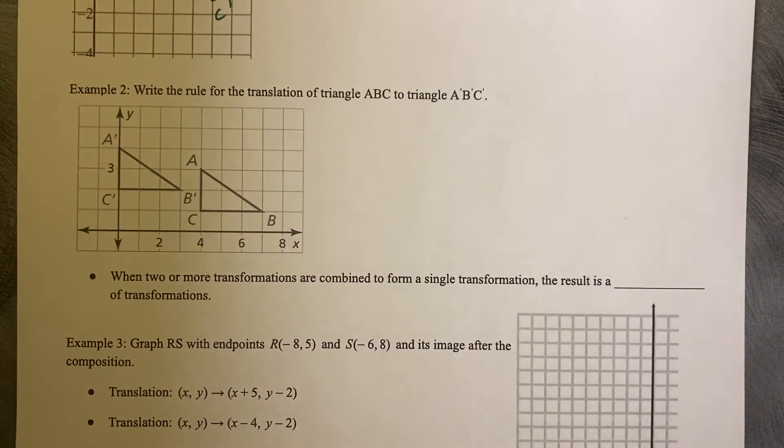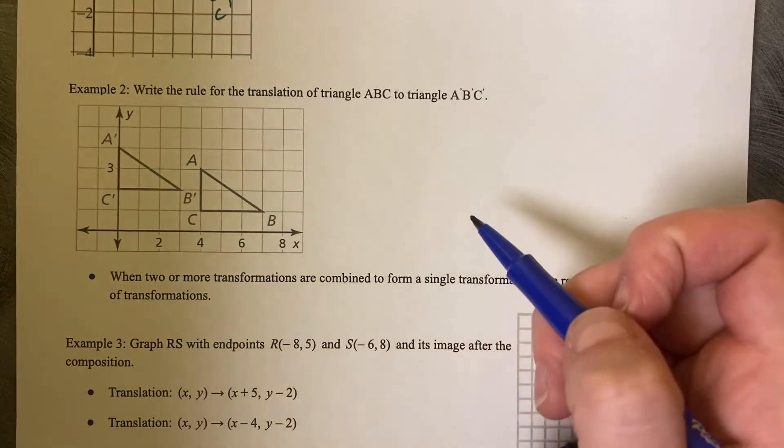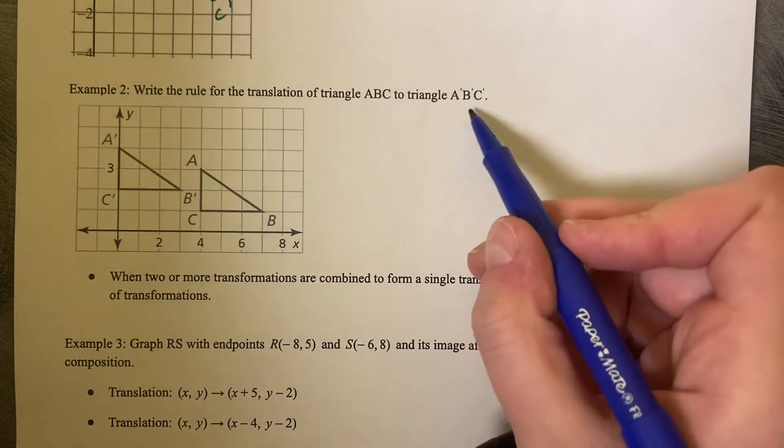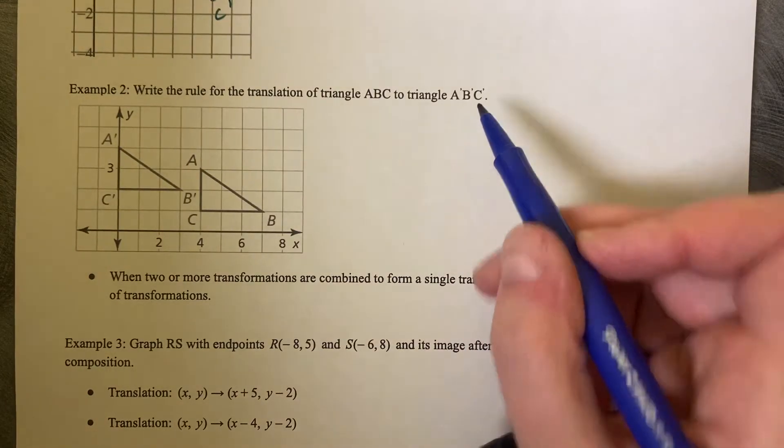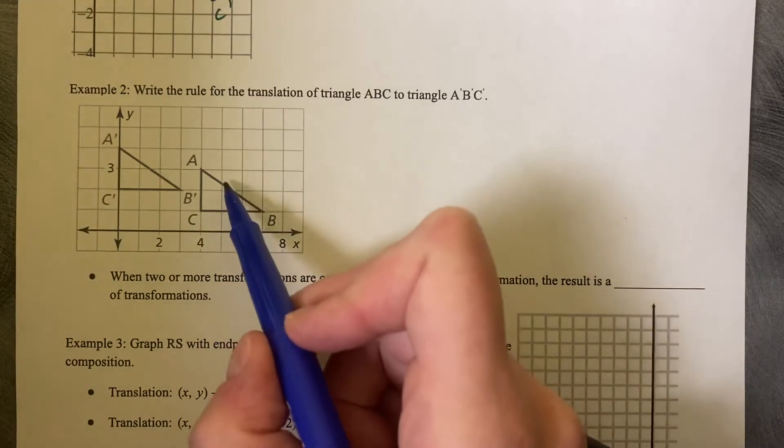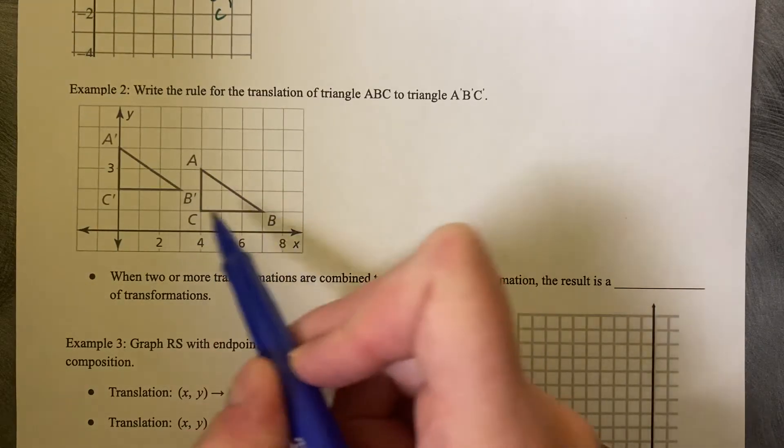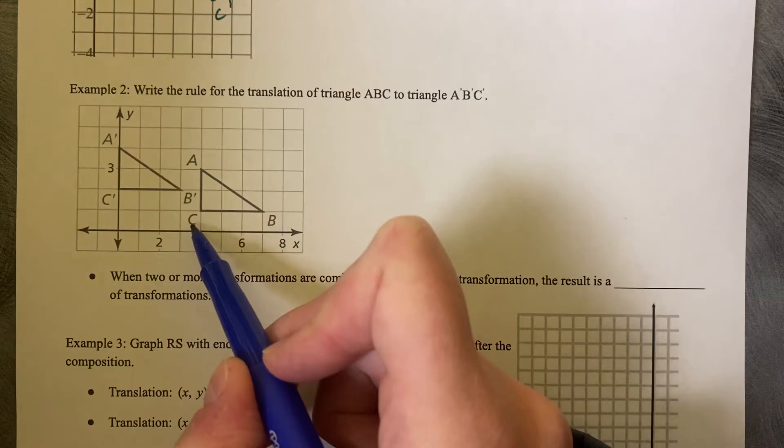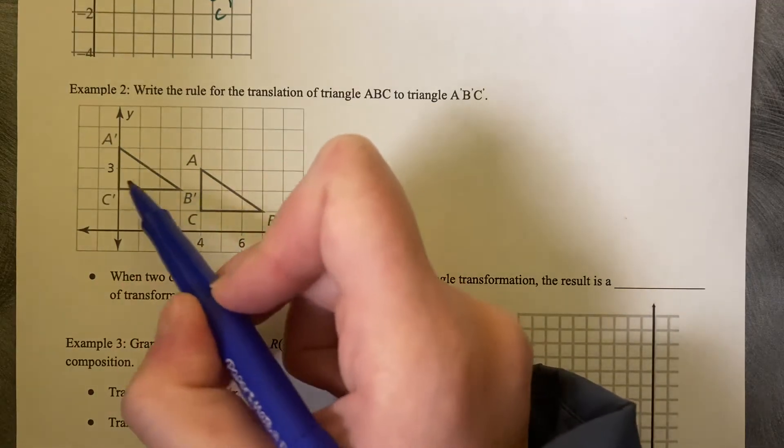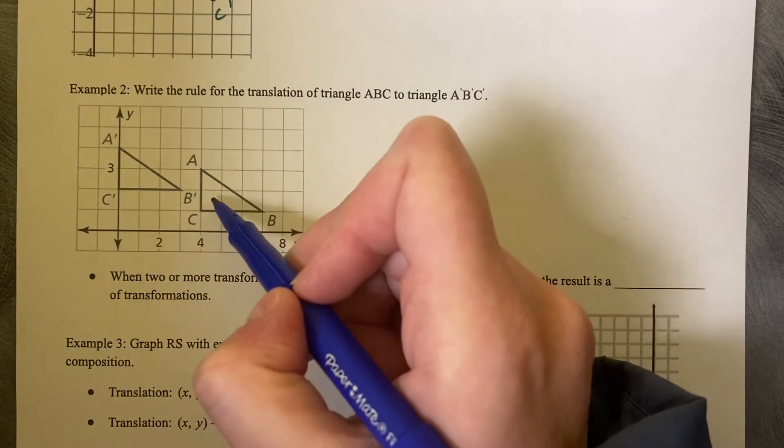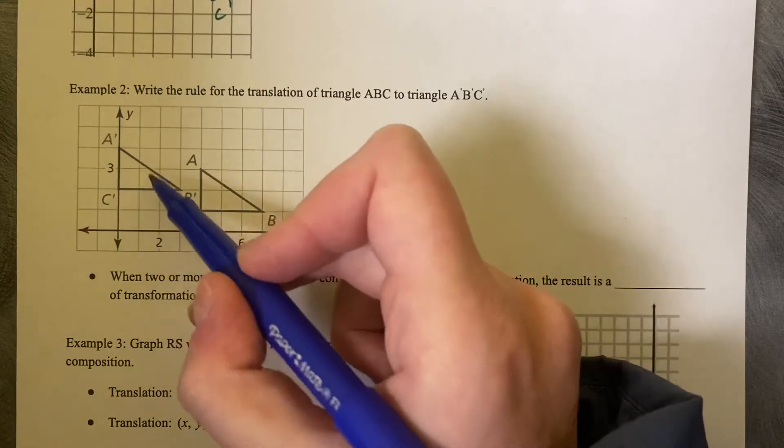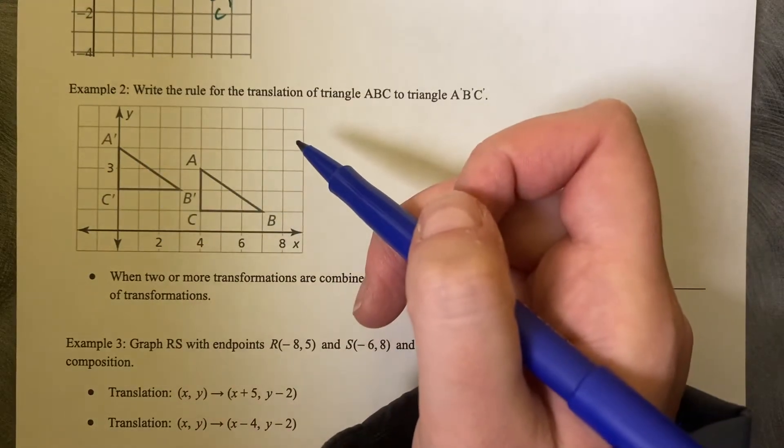Example 2. Write the rule for the translation of triangle ABC to triangle A prime, B prime, C prime. So what we need to notice is that this right-hand triangle is ABC, and this left-hand triangle is A prime, B prime, C prime. So this triangle is your start triangle, and this triangle is your finish triangle.